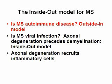This is an outline of my talk on the roles of axonal degeneration in MS. I will start by reviewing the autoimmune etiology of MS and its animal model. Then, I will talk about the hypothesis that MS is caused by a virus infection in which axonal degeneration can precede demyelination. Lastly, I will show you evidence that axonal damage can contribute to recruitment of inflammatory cells into the brain.